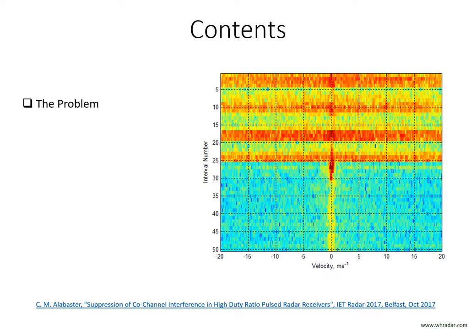I shall start by describing the problem of mutual interference between like radars. The figure to the right shows the devastating effect interference can have on a Doppler radar, as we see it being switched on at interval 25, halfway up the display. The interference comes from a similar radar which is periodically sweeping through the victim's receiver band. Neither radar has any measures to reduce interference.